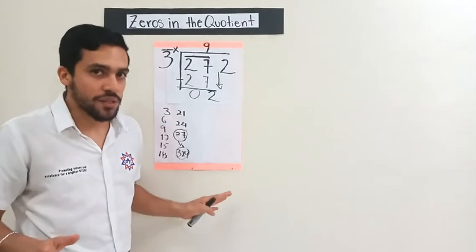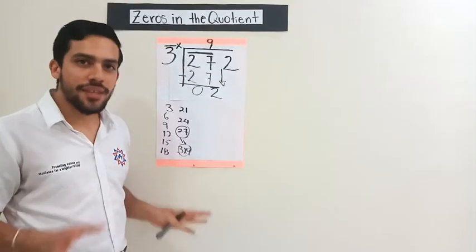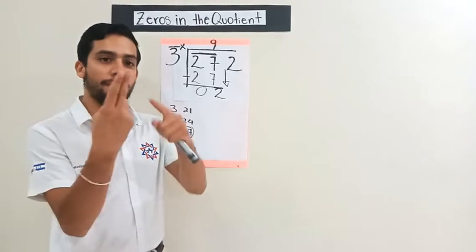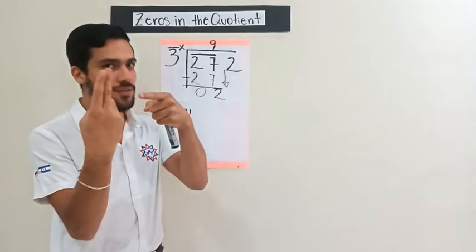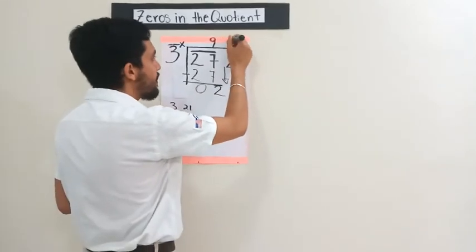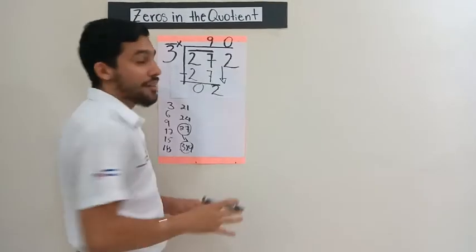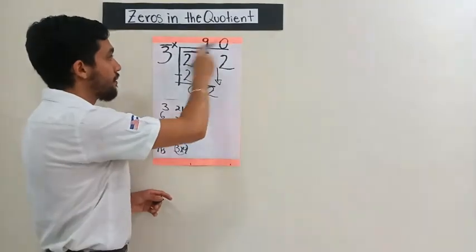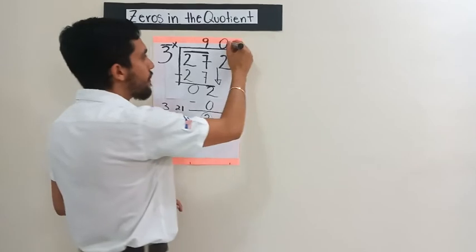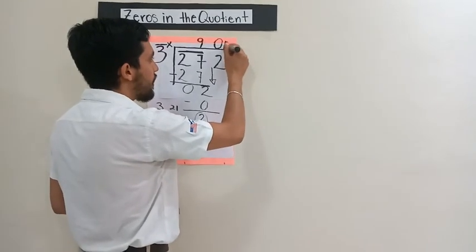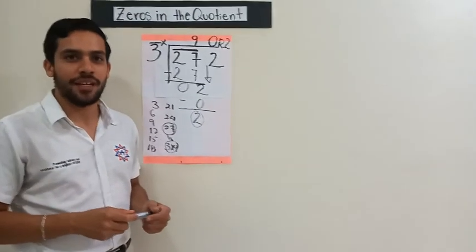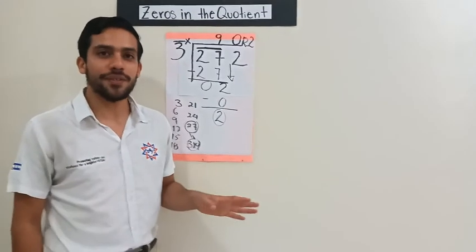Since there are no groups of 3 in 2, the only thing we need to do is write a 0. Because imagine — what if you try to make a group of 3 with only 2 things? You can't make a group of 3. So that's why we say there are no groups, and we use 0 to represent that there are no groups in that number. Then 0 times 3 is 0. Bring down the 2 — in this case, 2 will be the remainder. So we write remainder 2. This is the way we solve these exercises. Just keep in mind that you need to compare, and if there are no groups, use a 0.